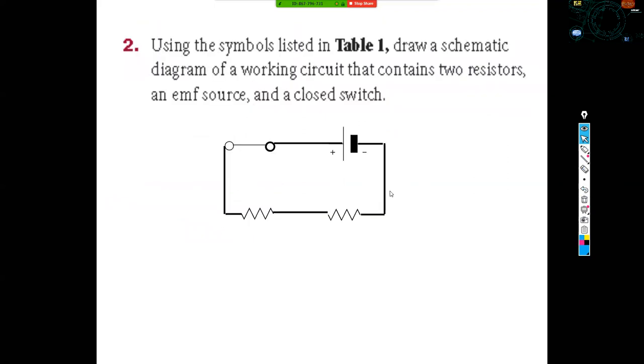All right. So it says, draw a diagram of a working circuit that contains two resistors, an EMF source, which is the battery, and a closed switch. So here you go. So you got your closed switch. I got two resistors and I got my voltage source. Now, you could draw this a number of different ways. I could have drawn it and drawn a resistor here. I could have drawn a closed switch here and a resistor over here. It's going to work the same way. It doesn't matter.